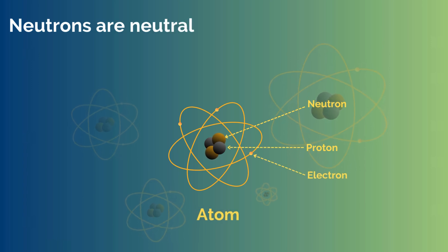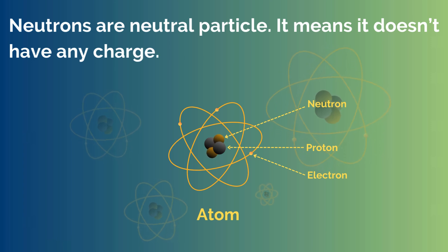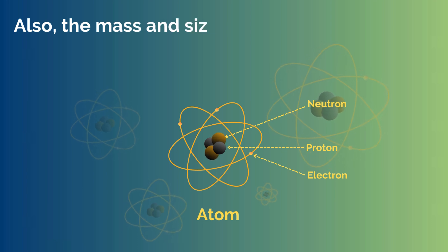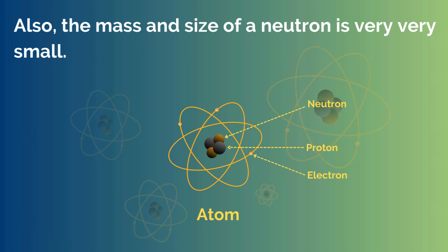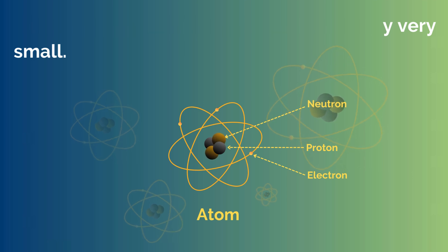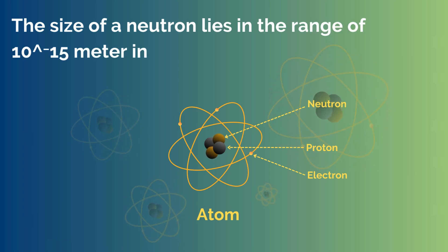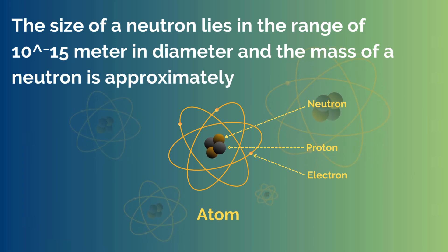Neutrons are neutral particles. It means that it doesn't have any charge. Also, the mass and size of a neutron is very small. The size of a neutron lies in the range of 10 to the power of minus 15 meters in diameter. And the mass of a neutron is approximately 1.6740 times 10 to the power of minus 27 kilograms.